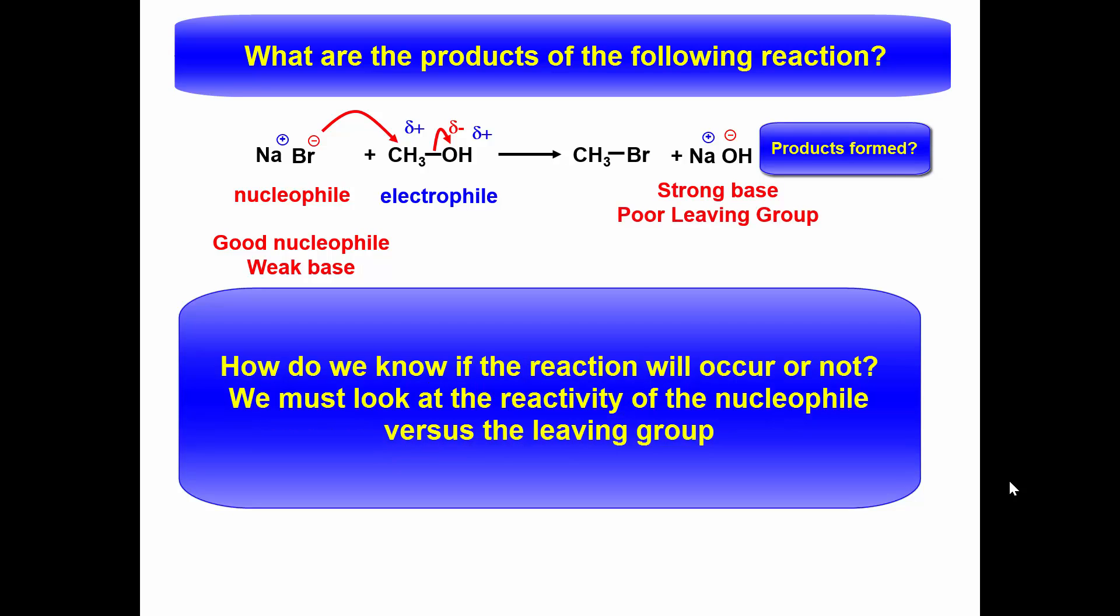How do we know that this reaction will occur or not occur? We must look at the reactivity of the nucleophile versus the leaving group. The bromide ion is a good nucleophile, but a weak base.